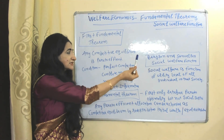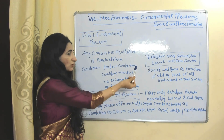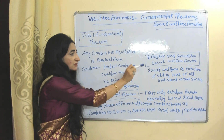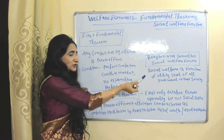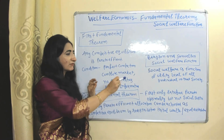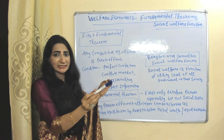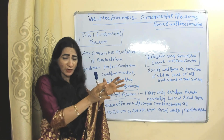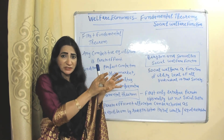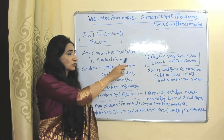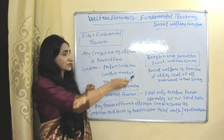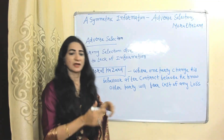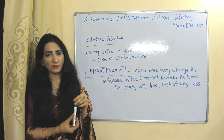Bergson and Samuelson's social welfare function states that social welfare is a function of the utility levels of all individuals in society — by adding the utility of all individuals in society, we can construct the social welfare function.